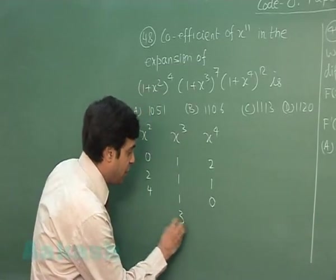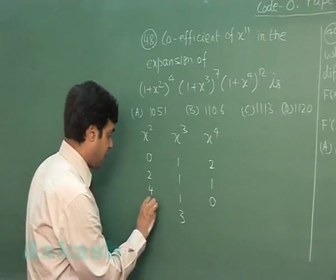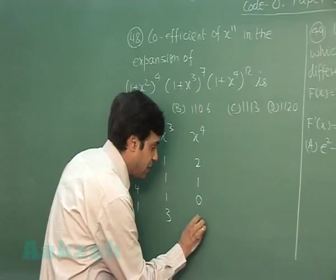Next, if the power of x³ is 3, that is 9 is covered. The only possibility left is x² to the power 1 and x⁴ to the power 0.